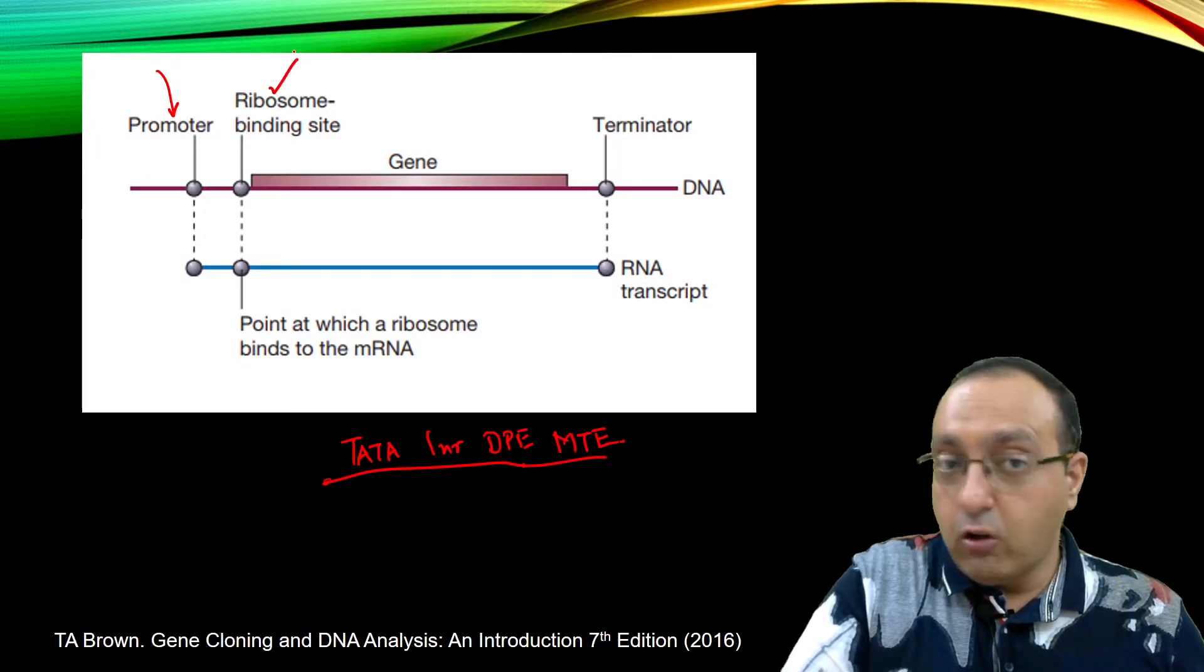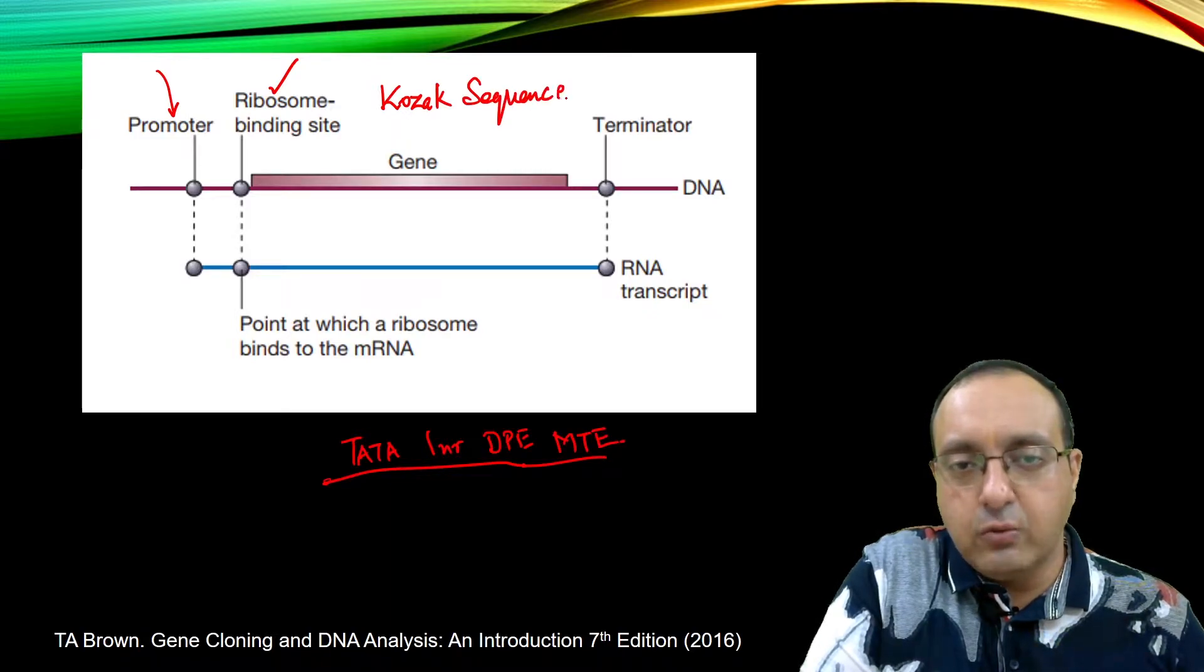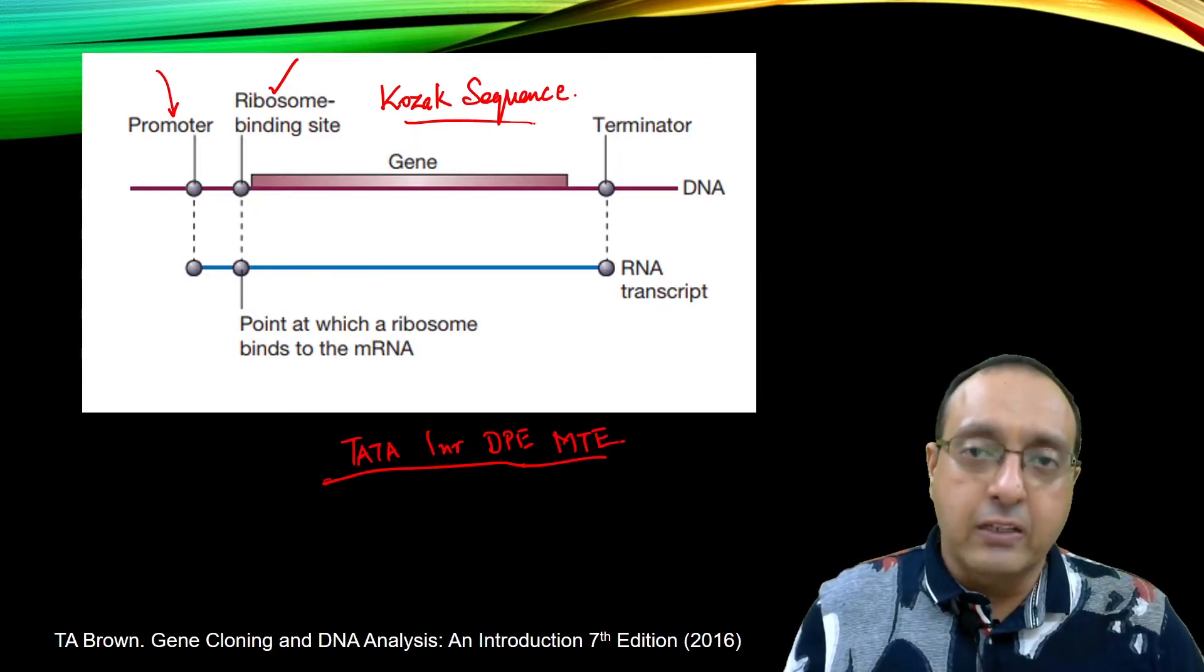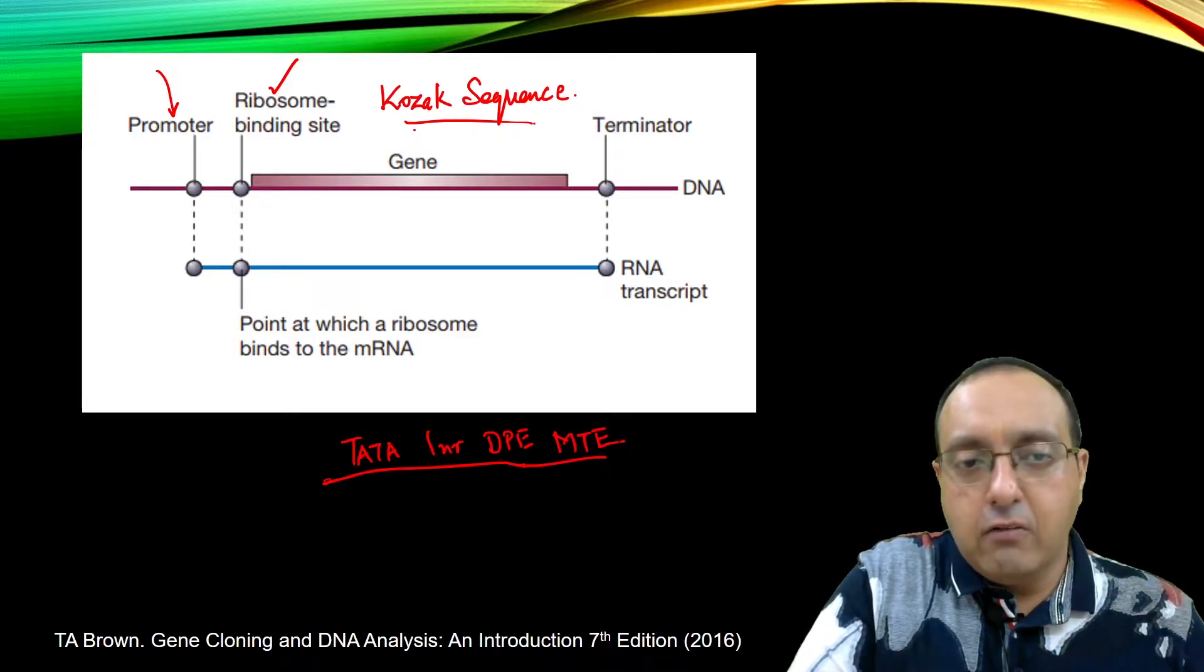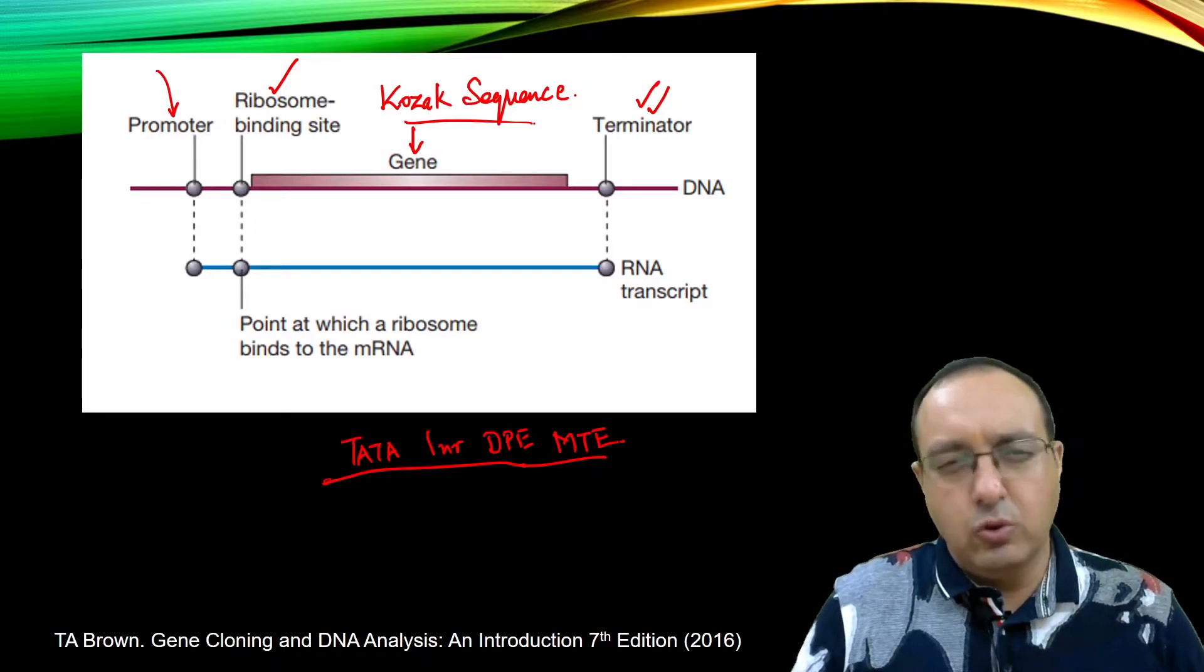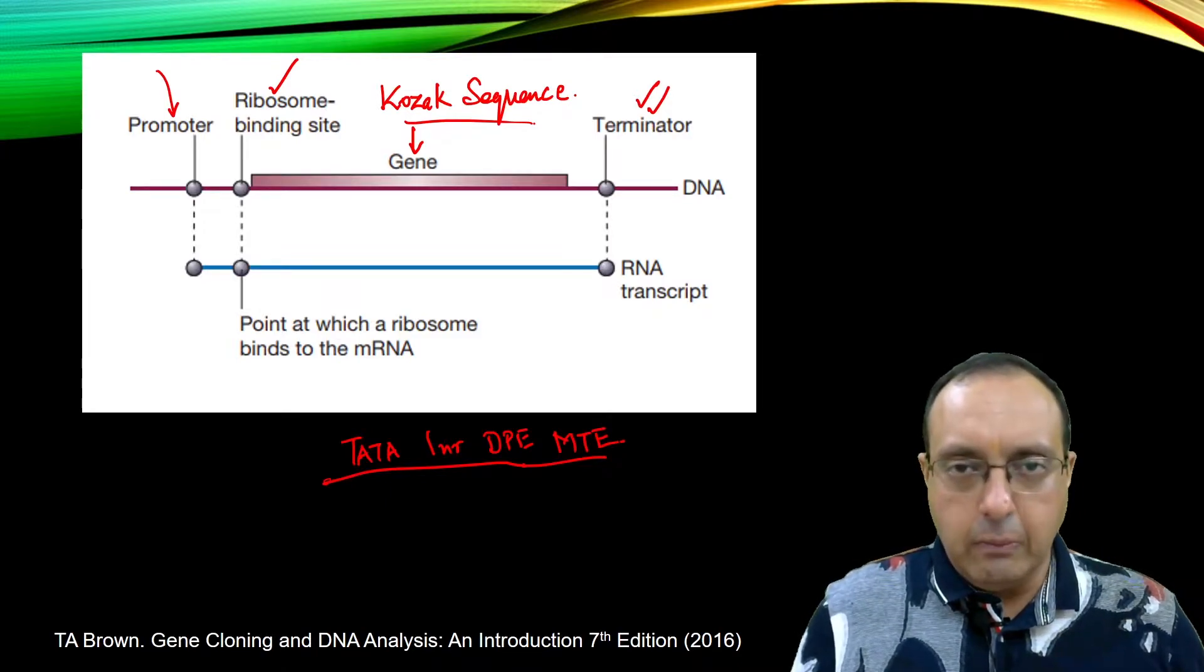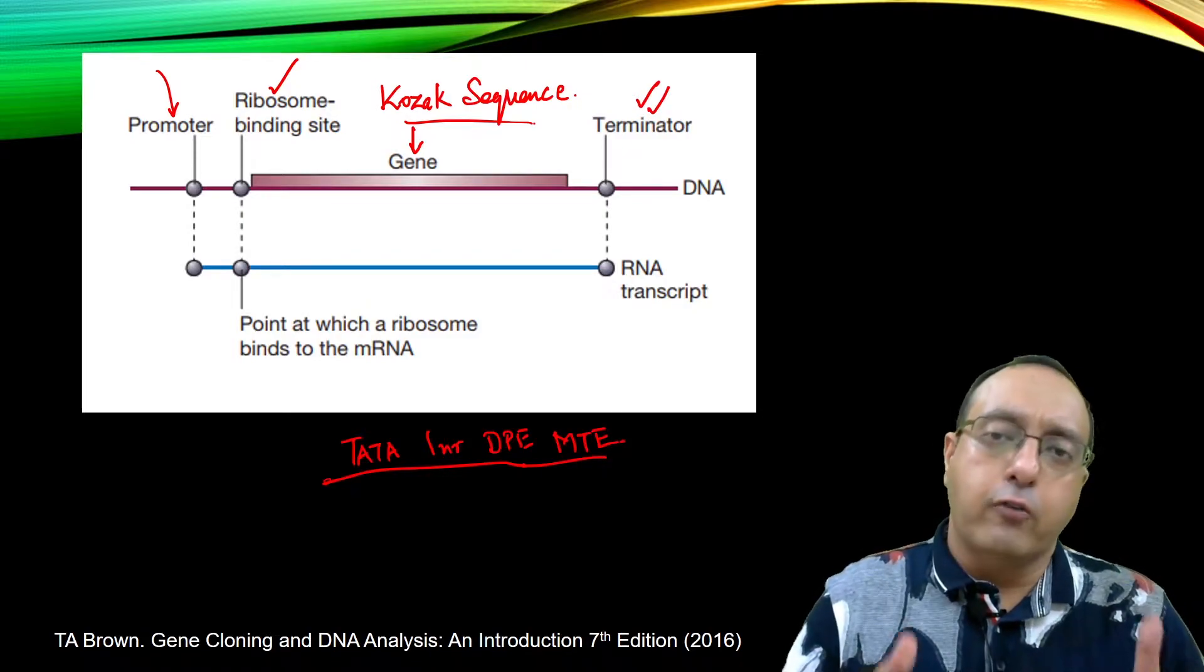We need a ribosome binding site also. And in this case, it will be Kozak sequence. Remember, in the prokaryotic system, we had the Shine-Dalgarno sequence. Kozak sequence acts as the ribosome binding site. It was first identified by Marilyn Kozak and that's why it is named after Marilyn Kozak. We have our gene of interest that we want to express and we need our transcriptional terminator. These can be derived from eukaryotic genes as well. Usually, for example, yeast alcohol dehydrogenase transcriptional terminator is used and some other terminators are available. So this is the basic architecture of the clone that we want to have for our recombinant protein.